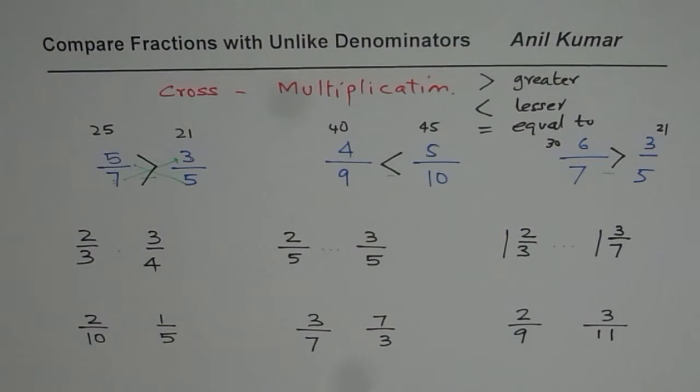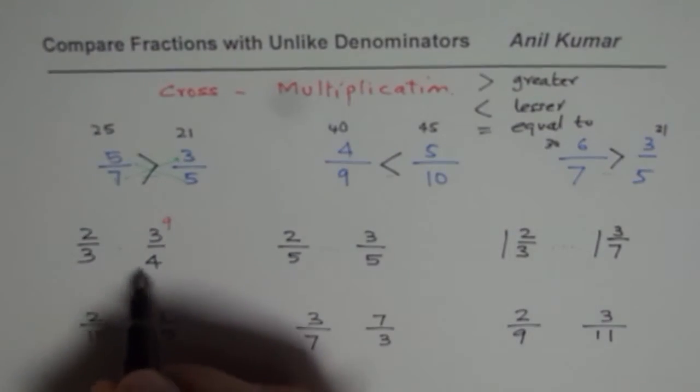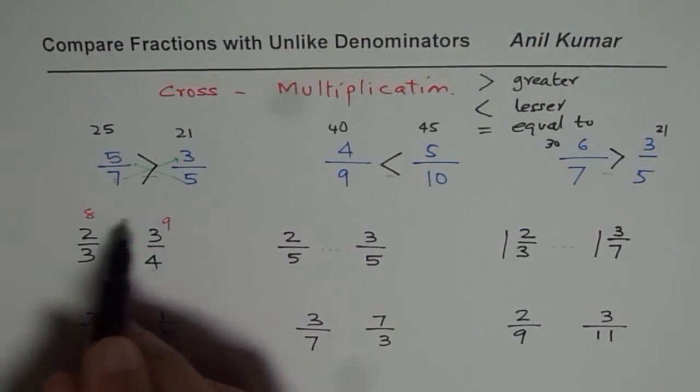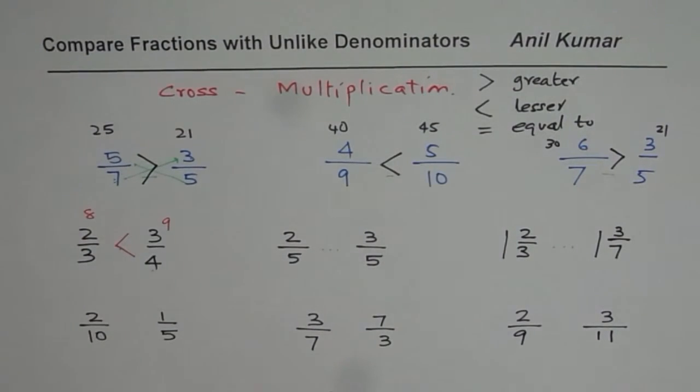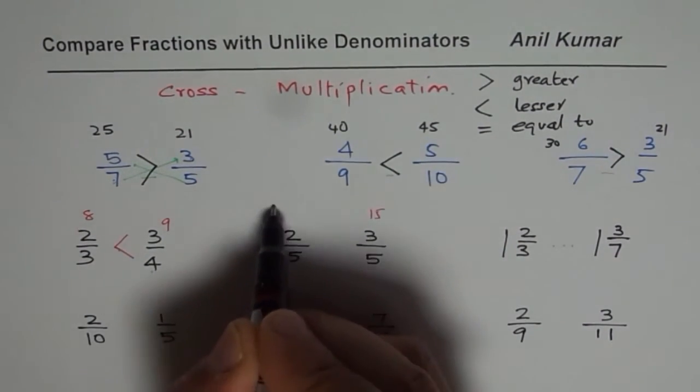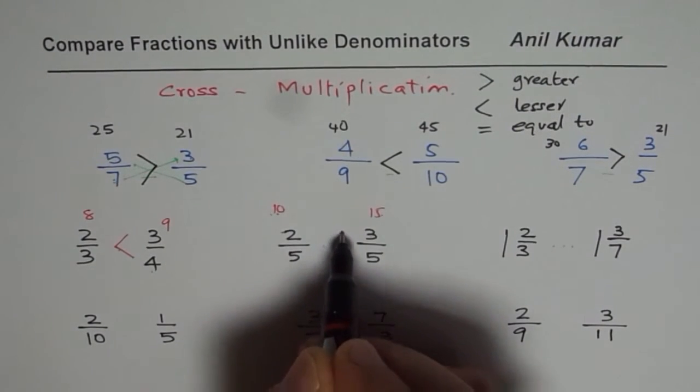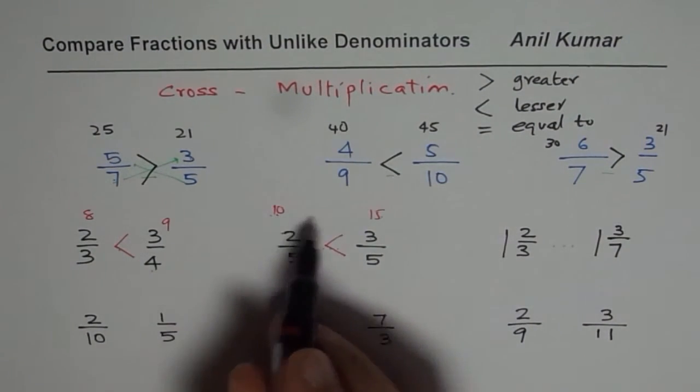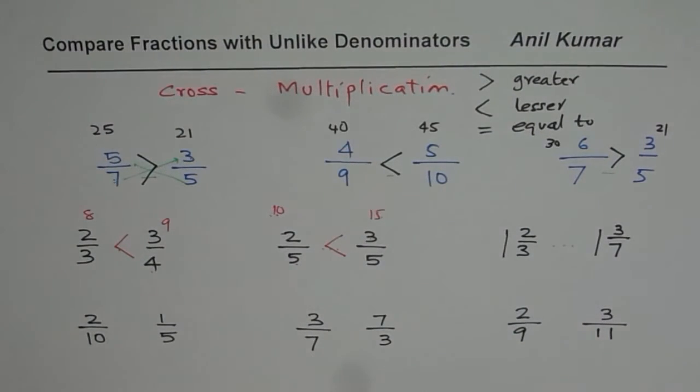Here is my quick solution. 3 times 3 is 9, 4 times 2 is 8, and we know 8 is less than 9, so I'll put it like this. 5 times 3 is 15, 5 times 2 is 10. 10 is less than 15, so I get here. 10 is less than 15, so 2 over 5 is less than 3 over 5.